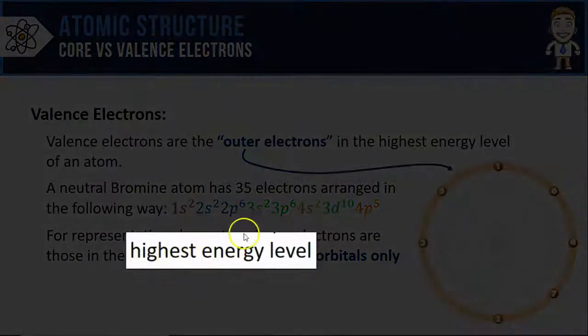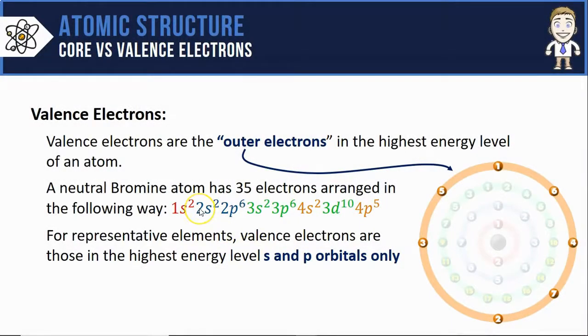The first is where it says highest energy level. In bromine's configuration, I've got electrons in the first energy level, second, third, and fourth. I ignore all of those but the highest energy level, in this case, the fourth.